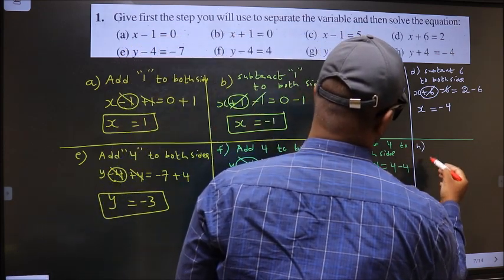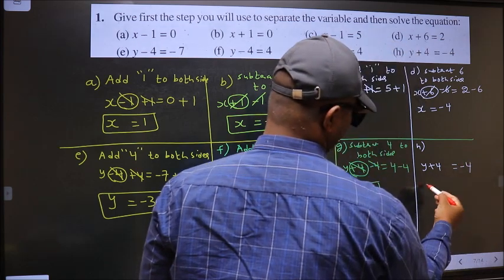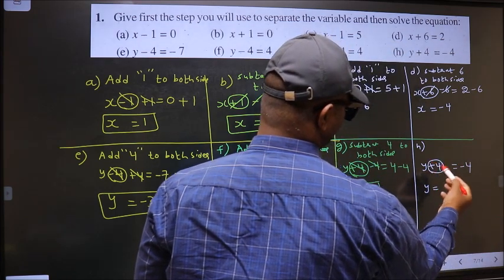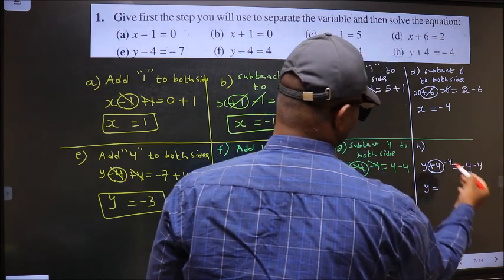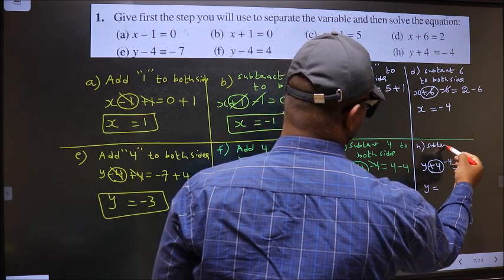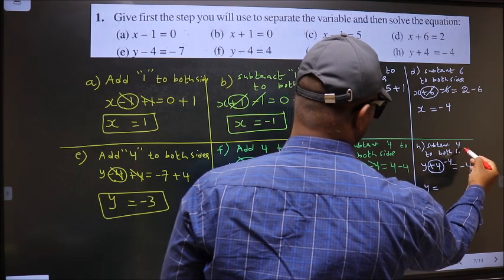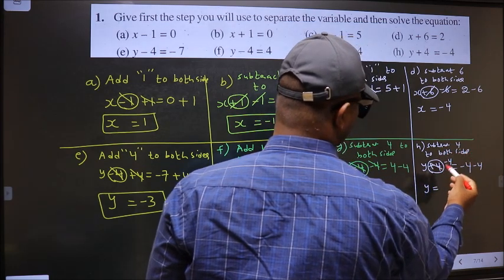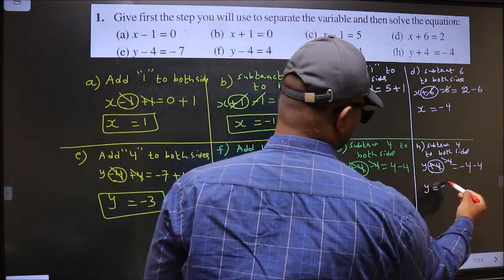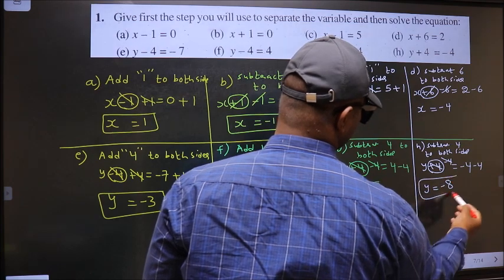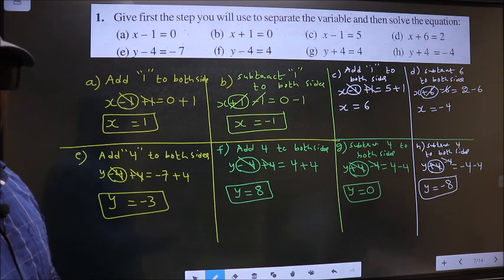Next, H. y plus 4 equal to minus 4. To get y, we should remove plus 4. To remove plus 4, you subtract 4 on both sides. So the step is: subtract 4 from both sides. Plus 4 minus 4 cancel out. y equal to minus 4 minus 4, which is minus 8. This is our answer. The question is completed.